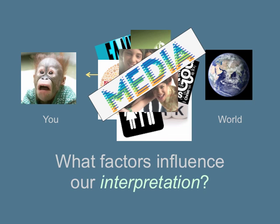Now, you might be wondering: is there any way to get around this? Can we just bypass all of this stuff in the middle? This isn't a philosophy class, so I'd be hesitant to answer yes or no with any great degree of certainty. But I would say that the difference between the person who knows they have all of these lenses — these cultural intermediaries between them and how they see the world — and the person who doesn't know about that is a huge difference.